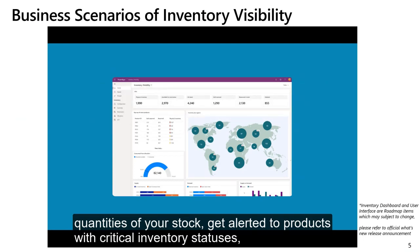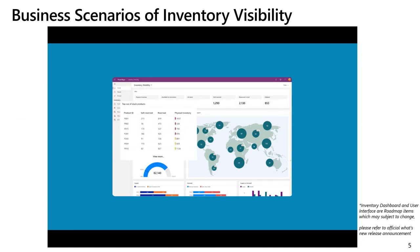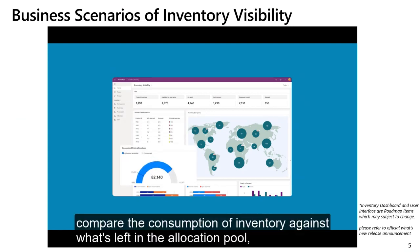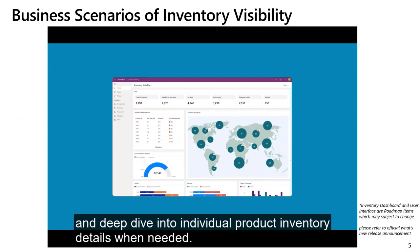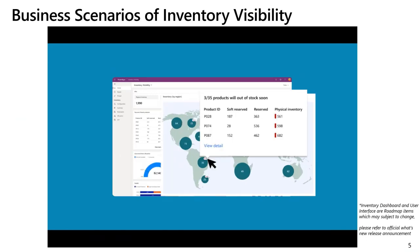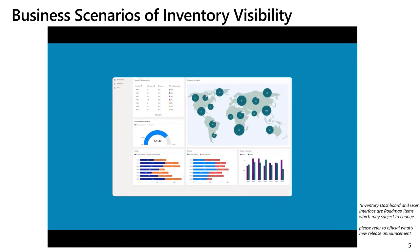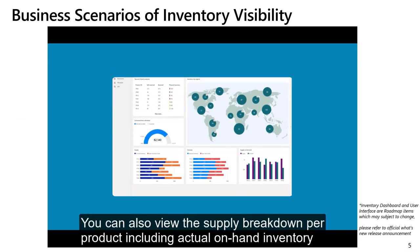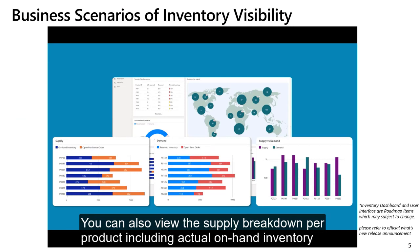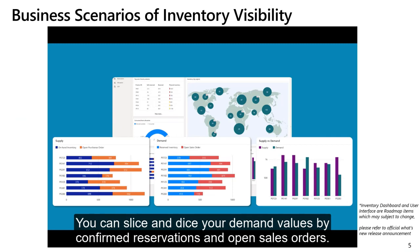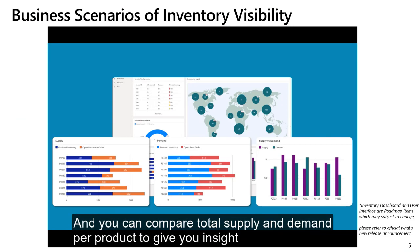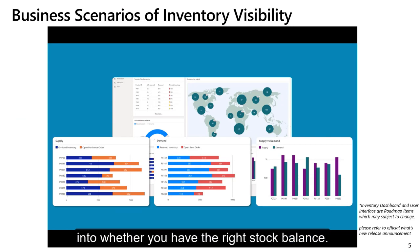You can get alerted to products with critical inventory statuses, compare the consumption of inventory against what's left in the allocation pool, and deep dive into individual product inventory details when needed. You can also view the supply breakdown per product, including actual on-hand inventory and incoming purchase quantities. You can slice and dice your demand values by confirmed reservations and open sales orders, and compare total supply and demand per product to give you insight into whether you have the right stock balance.